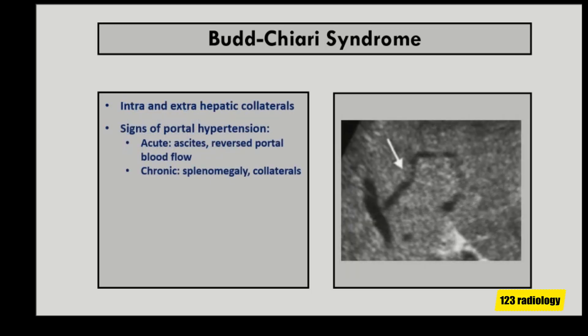Other indirect signs of Budd-Chiari syndrome are intra- and extra-hepatic collateral vessels. The development of intra-hepatic collaterals allows draining venous blood from the obstructed areas to preserved areas of the liver and to the upper portion of the inferior vena cava. In addition to cavocaval collaterals that characterize Budd-Chiari syndrome, portosystemic collaterals may occur, similar to those seen in portal hypertension.